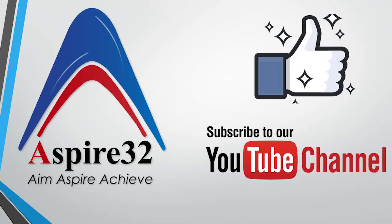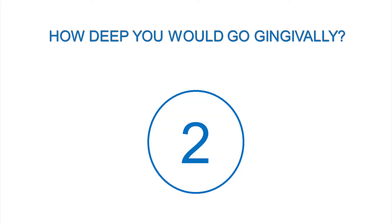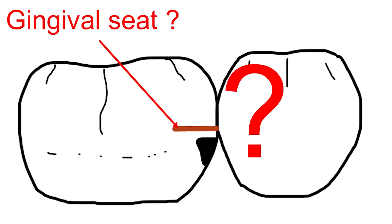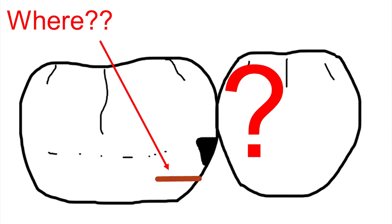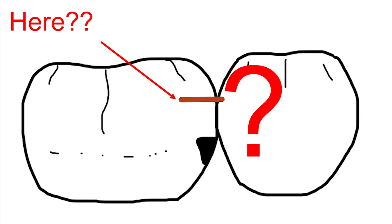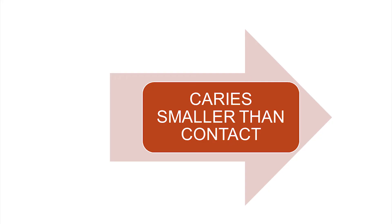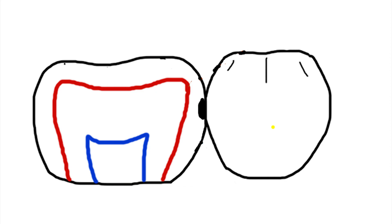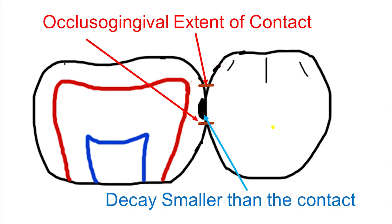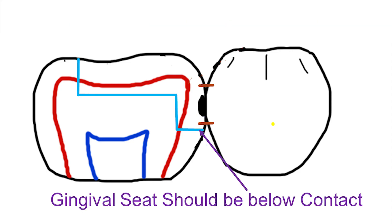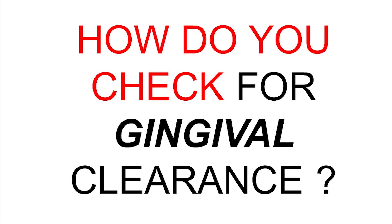Note that since you have to make occlusal convergence in the proximal box too, if you measure the width at the gingival level it will be more than the width at the occlusal area. You should also know that a reverse curve is required in maxillary molars — I have made a separate video on that. The height of the proximal box depends on the same two factors: the presence of decay and the occluso-gingival extent of the contact. In the first scenario, where caries is smaller than the occluso-gingival extent of the contact, you must take the gingival seat below the contact to get 0.5 mm clearance gingivally.